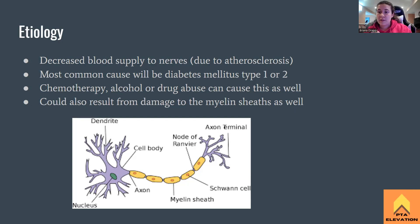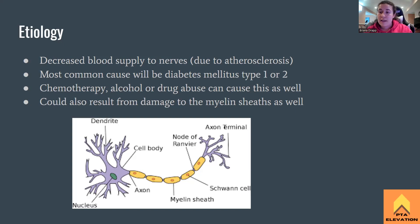This can also happen with chemotherapy — essentially they're giving you a concoction of drugs that are literally bringing you to the brink of death, and then a different concoction brings you back. Some peripheral tissues like nerve endings can be sacrificed in that process. Alcohol and drug abuse can also affect nerve conduction velocity, attack the myelin sheaths, and decrease the nerves' ability to conduct electricity. We'll also see peripheral neuropathy with crush injuries or pressure buildup, such as carpal tunnel syndrome where the nerve is getting compressed.